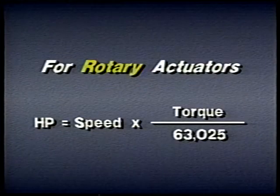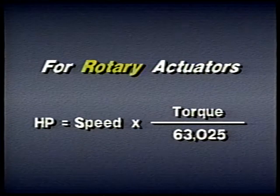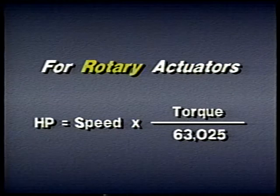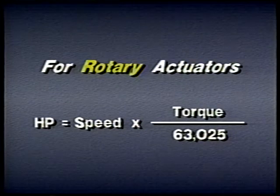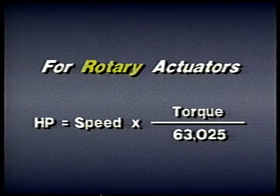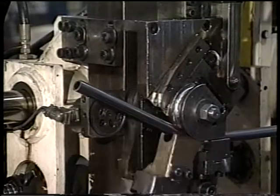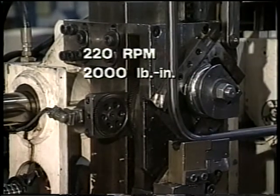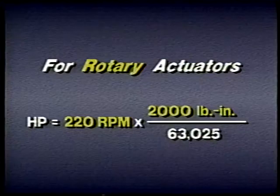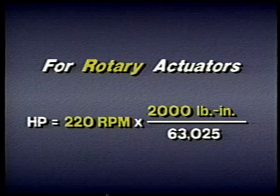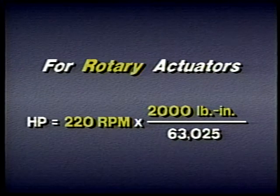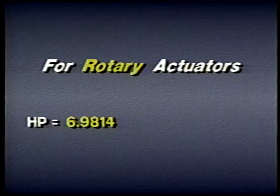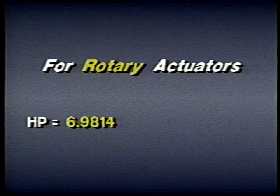The simplified formula for horsepower in a rotary actuator is speed in revolutions per minute times torque in pound-inches, divided by the constant 63,025. For example, a motor operating at 220 RPM delivering 2,000 pound-inches of torque: 220 times 2,000 divided by 63,025 equals approximately 7 horsepower.